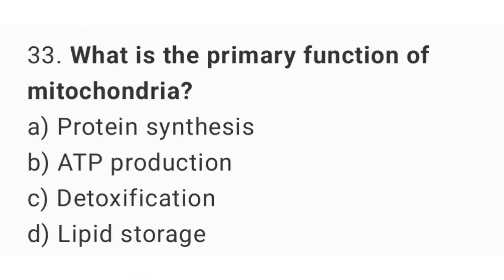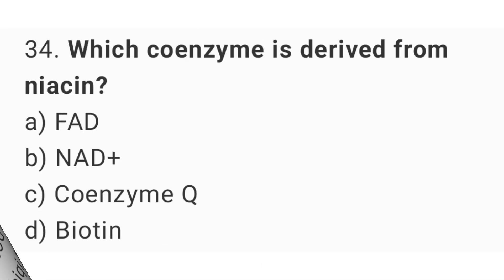Question number 33: What is the primary function of mitochondria? The right answer is option B: ATP production.